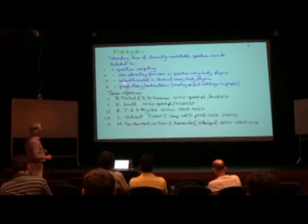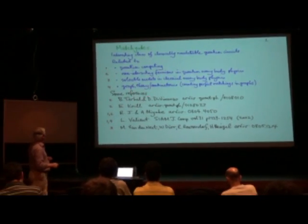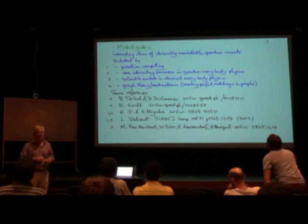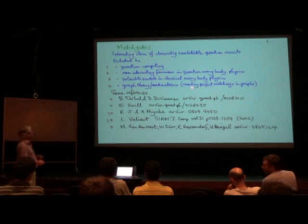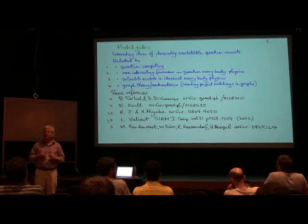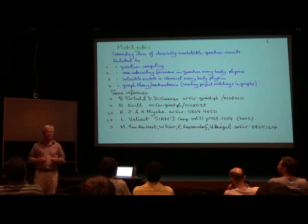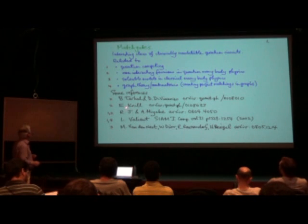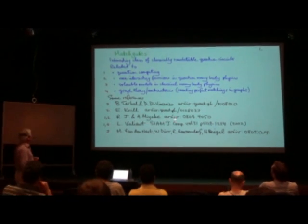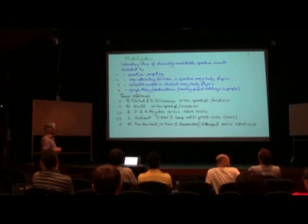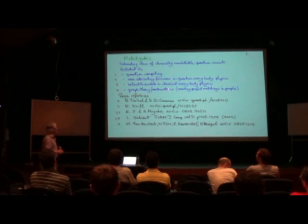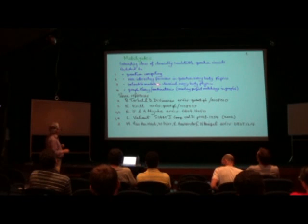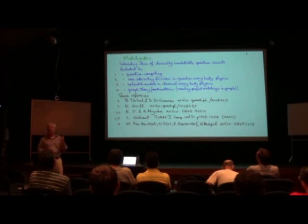Fortunately, after 2000, about a year or so later, Manny Knill, Barbara Tahal, and David DiVincenzo independently explained how this result is closely related to known results in fermionic many-body physics — the classical simulability or solvability of non-interacting fermion models. That was an immense clarification. And then I and Akumazu Miyake and others worked on this and produced simpler proofs. More recently, matchgates were shown to be closely related to solvable models for classical many-body physics, which is a rather interesting connection.